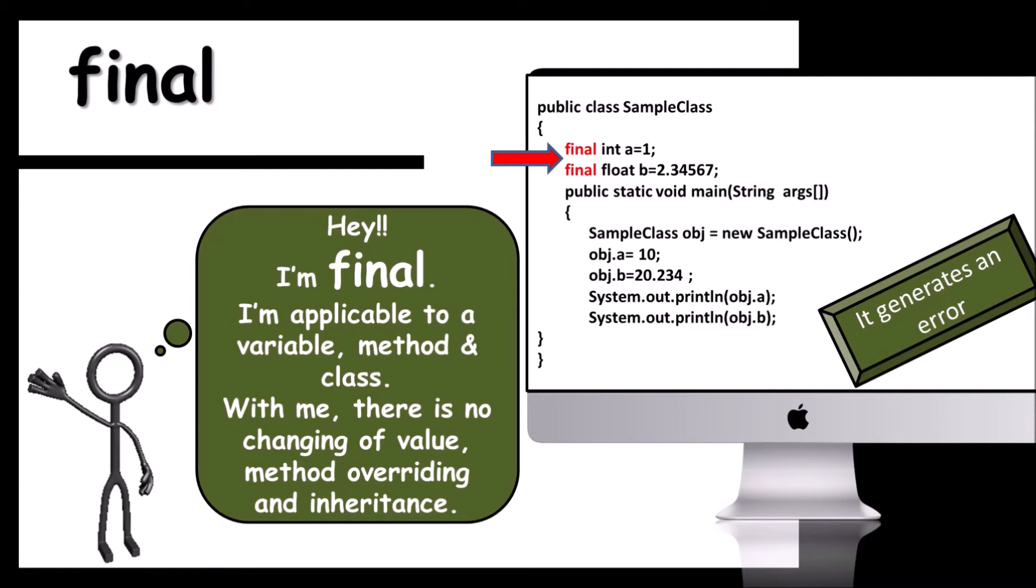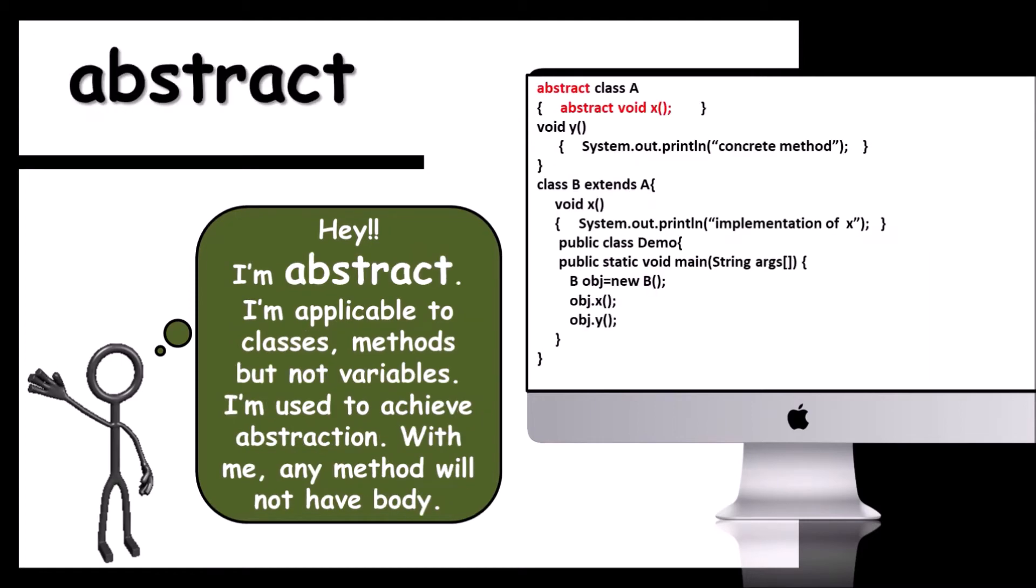And now it's abstract's turn. Here, I'm an abstract. I'm applicable to classes and methods but not variables. I'm used to achieve abstraction. With me, any method will not have body. In this example you can observe abstract void x method. As abstract, the body of this method can be found in its subclass, that is class B, and produces the desired output.